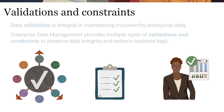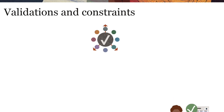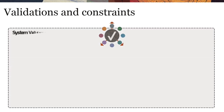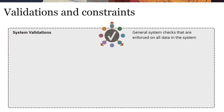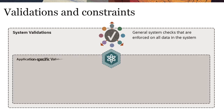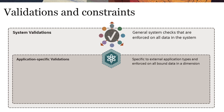There are three types of validations. System validations provide general system checks that are enforced on all data in the system. Application-specific validations are specific to external application types and are enforced on all bound data in a dimension.